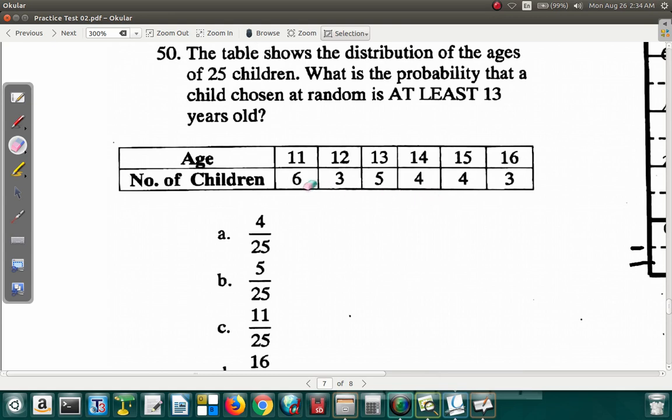Number of children. They should add up to 25. 6 and 3 is 9, 9 and 5 is 14, and 4 is 18, 19, 22 and 22. 5 and 2, 5 and 3, not 2 and 3, 5. So it's 25. Right? They add up to 25. What is the probability that a child chosen at random, meaning you just pick one, close your eye, and just point. You don't know where you're pointing. And it happens that you point to or you pick any one of them. What is the probability that a child chosen at random is at least 13 years old?